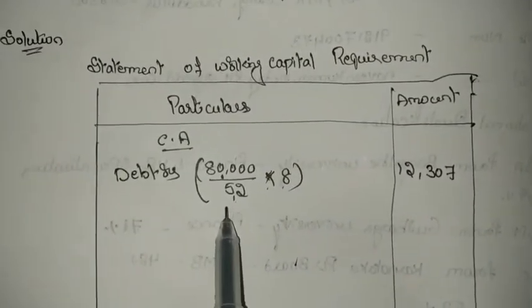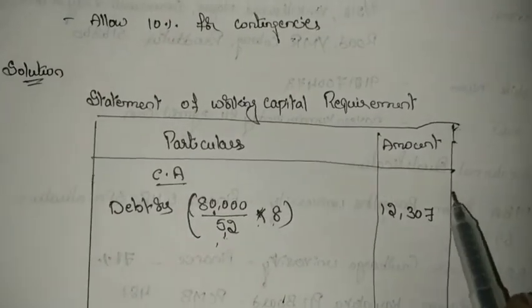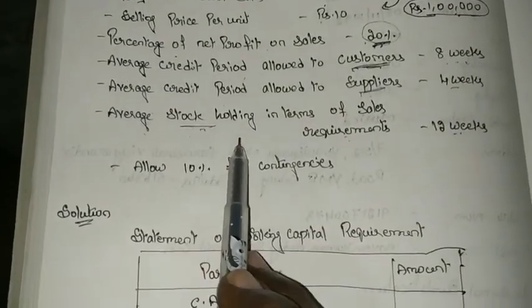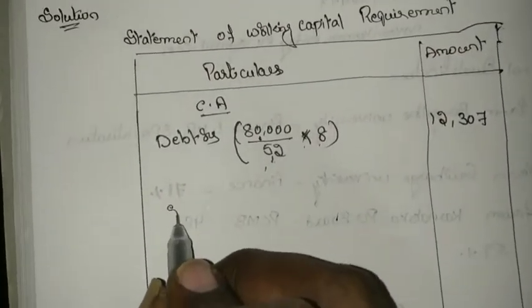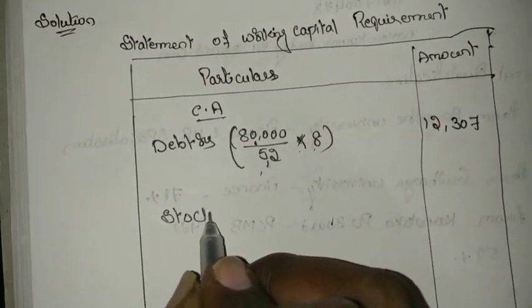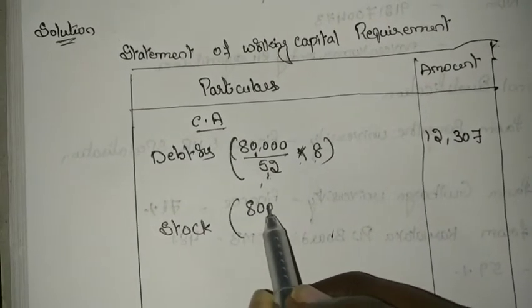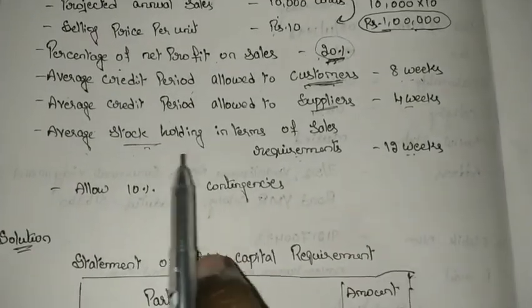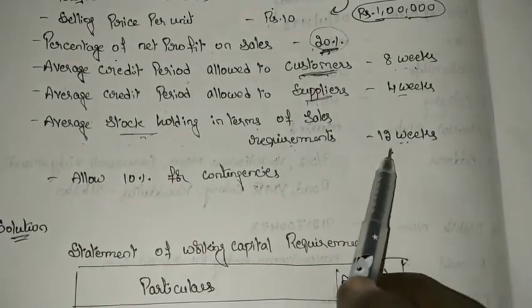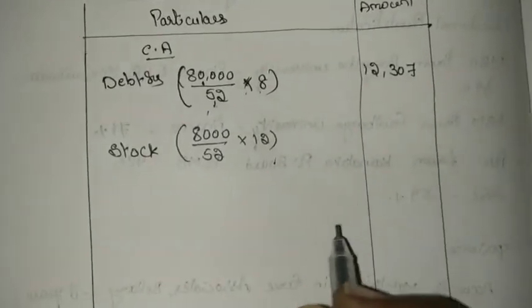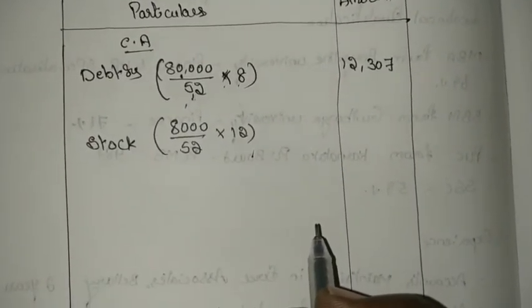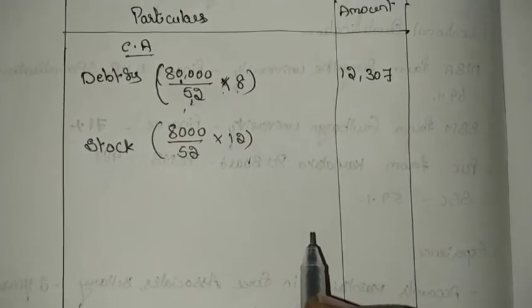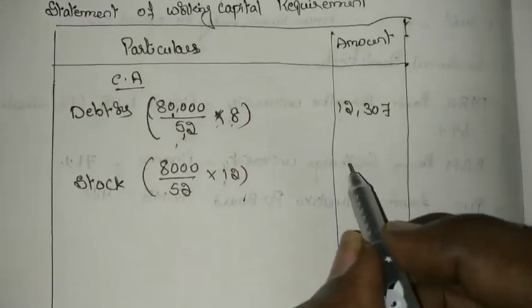The second current asset is average stock holding in terms of sales requirements. For stock: 80,000 ÷ 52 × 12 weeks = 18,463 rupees.